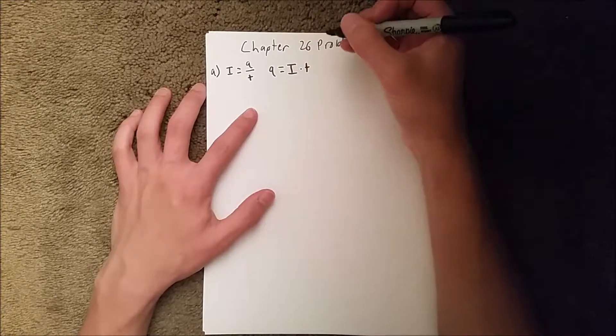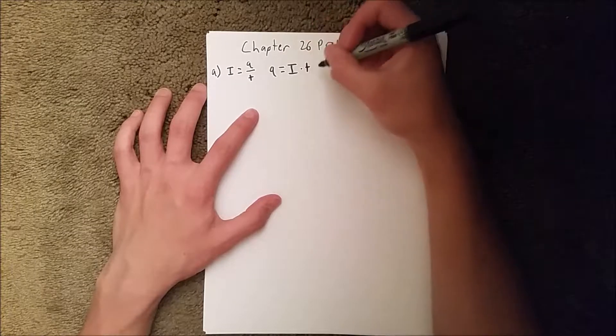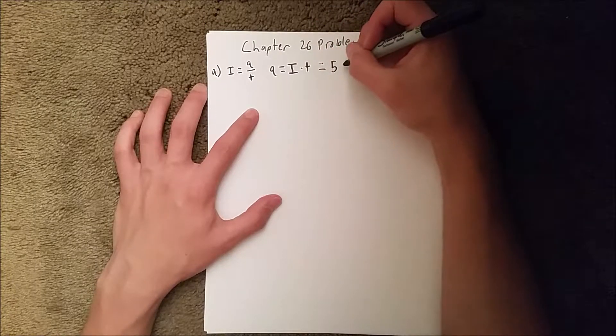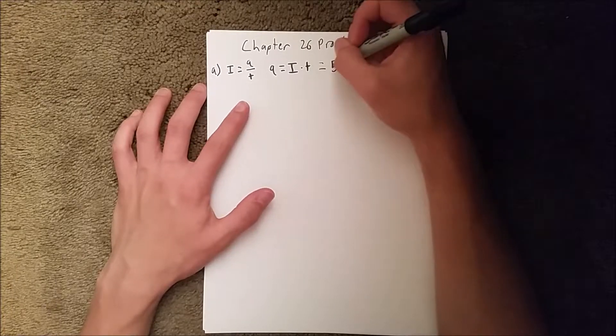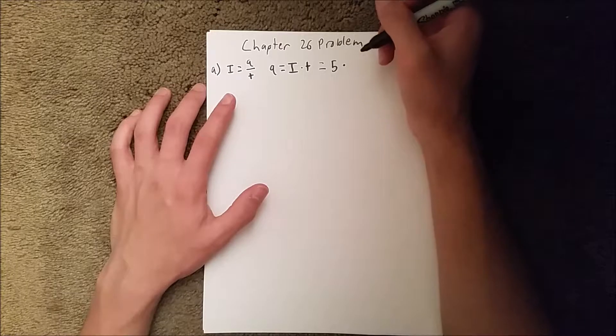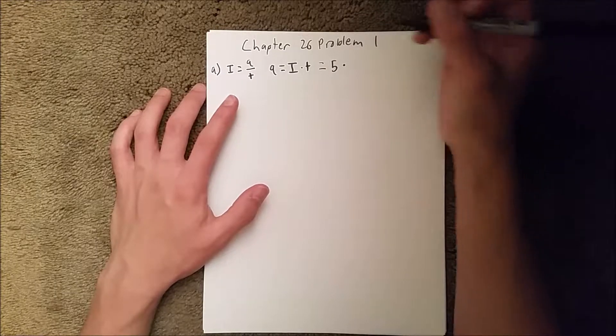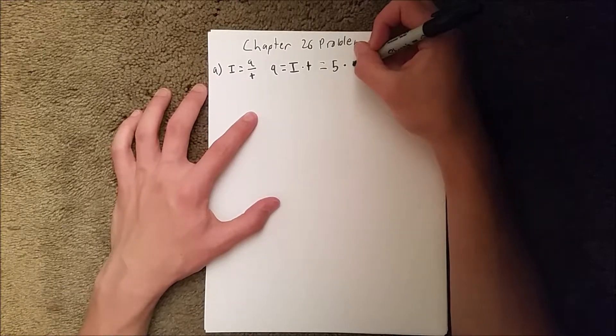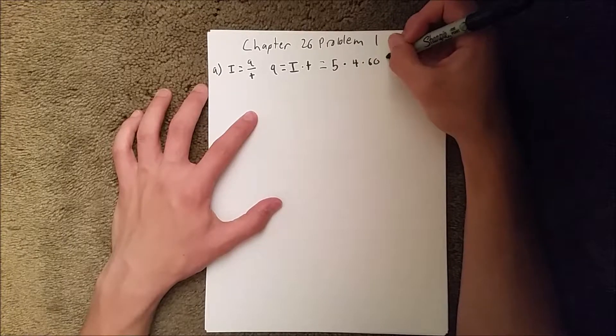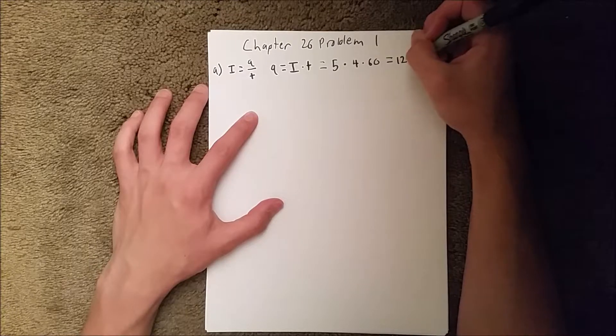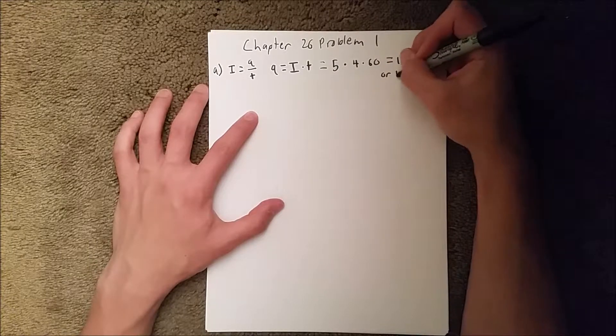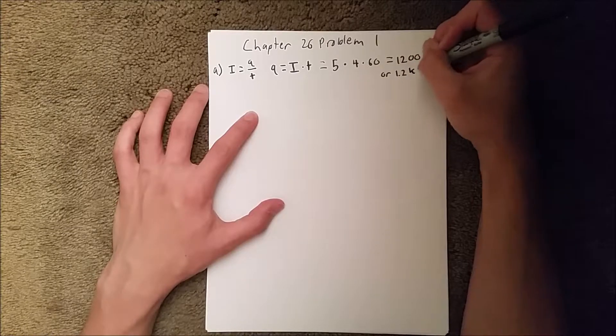With those we are given, we can rewrite this as 5 amps times the time. Now, we're given the time as 4 minutes, and this has to be in seconds. So we're going to do 4 minutes times 60 seconds to convert it to seconds. And that gives us 1200 coulombs, or 1.2 kilocoulombs.